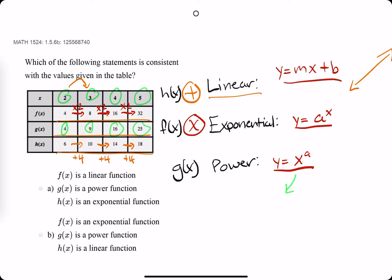So our function for g, g of x, must be x squared because 2 squared is 4, 3 squared is 9, 4 squared is 16, 5 squared is 25. So with this in mind, that leaves us with option b. So b must be the correct answer.